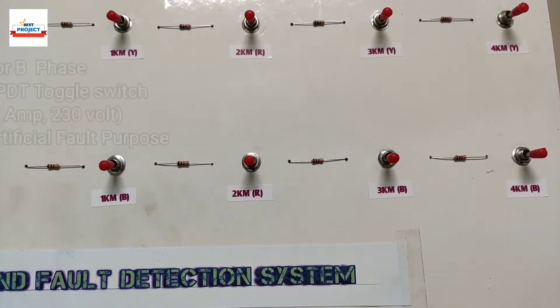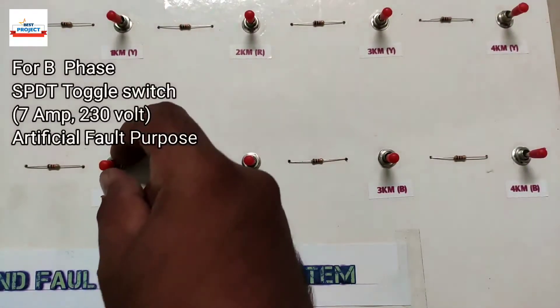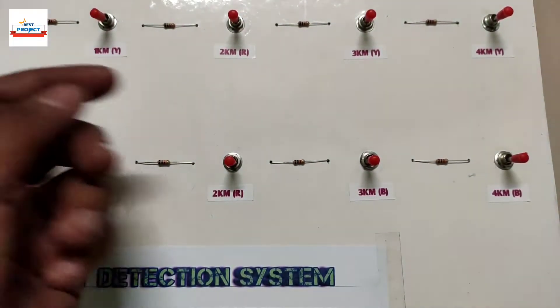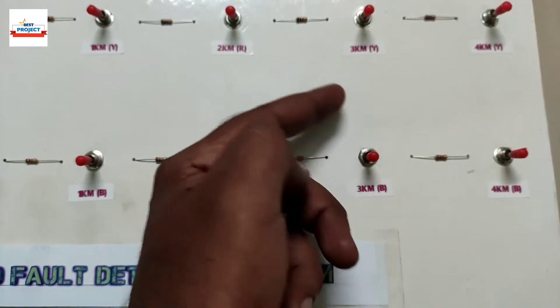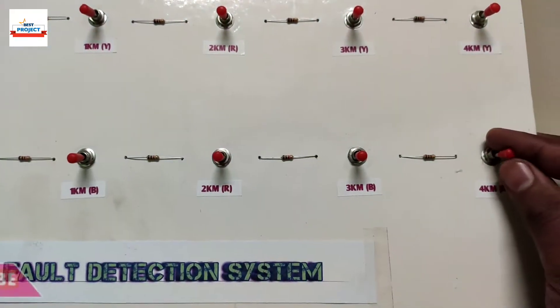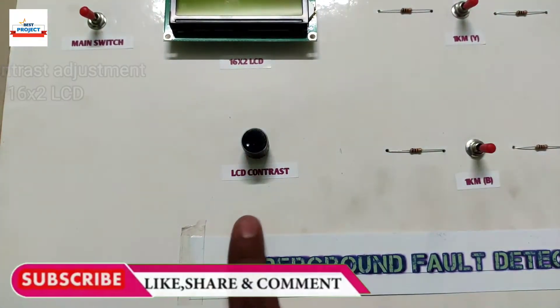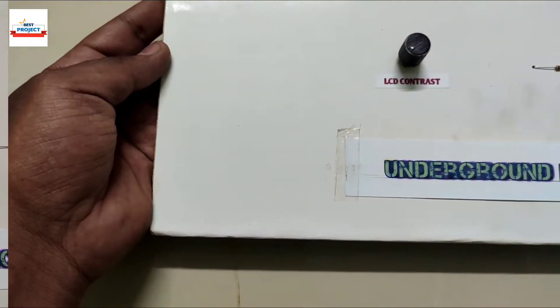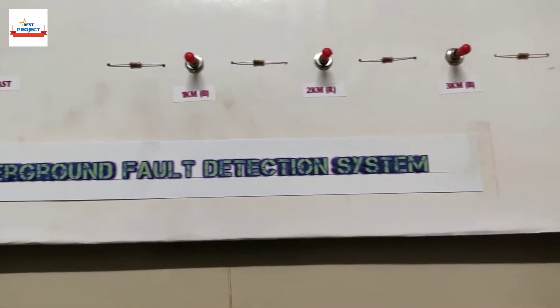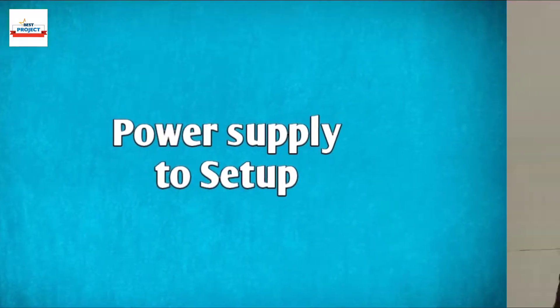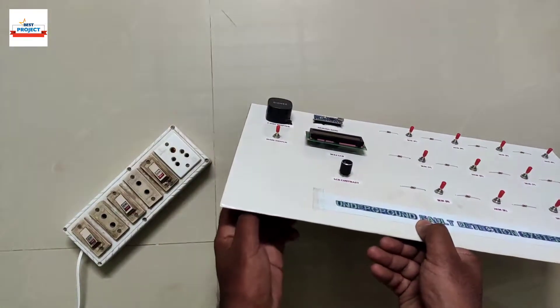First switch creates fault at one kilometer, second one creates fault at two kilometers, and same for three and four kilometers. This black knob is the contrast adjustment knob for 16 by 2 LCD. Please like this video for our support. Project needs main supply to execute the operation.